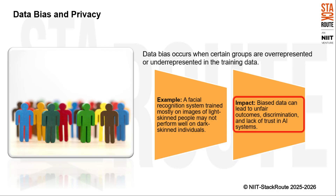The presence of biased data in AI can have significant negative consequences. It can result in unfair outcomes where certain groups are systematically disadvantaged, and it can lead to discrimination at both an individual and societal level. Moreover, biased AI systems erode trust, as people are less likely to rely on technology that treats them unfairly. Understanding and addressing data bias is crucial for developing AI systems that are fair, inclusive, and trustworthy.